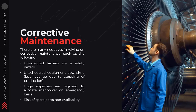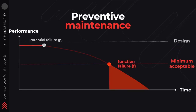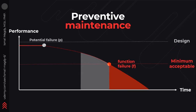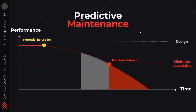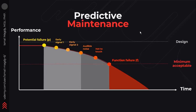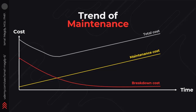From corrective maintenance, where you fix issues as they arise, to preventive maintenance to stay ahead of problems, and predictive maintenance using data to forecast issues, and of course proactive maintenance preventing failures before they even occur.